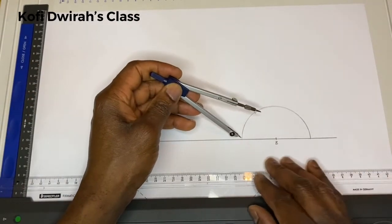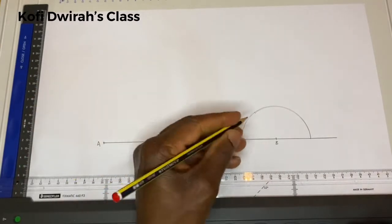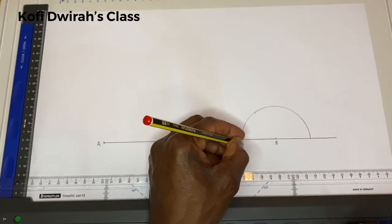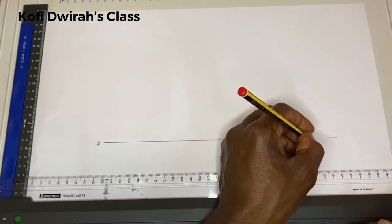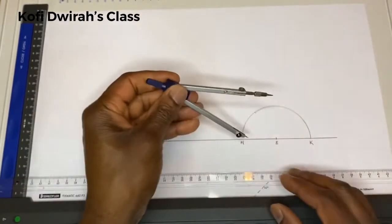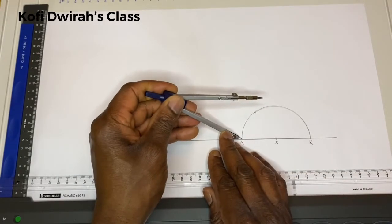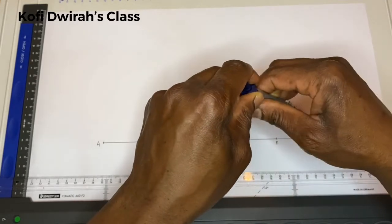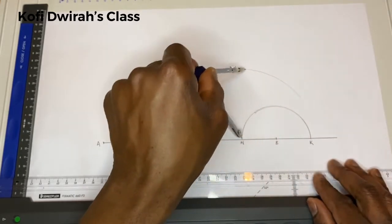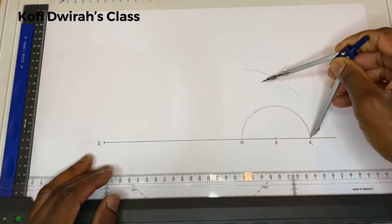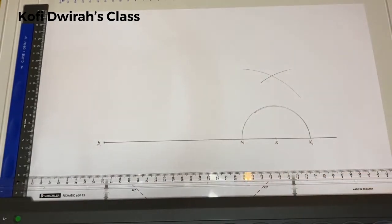We name the intersection points as N and K. Then at point N you draw an arc, and at point K you draw another arc. From points N and K, you draw a perpendicular line to get 90 degrees.